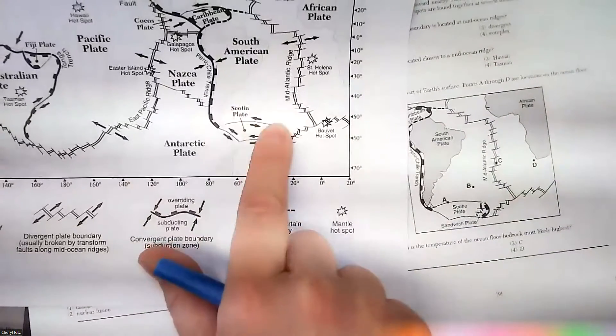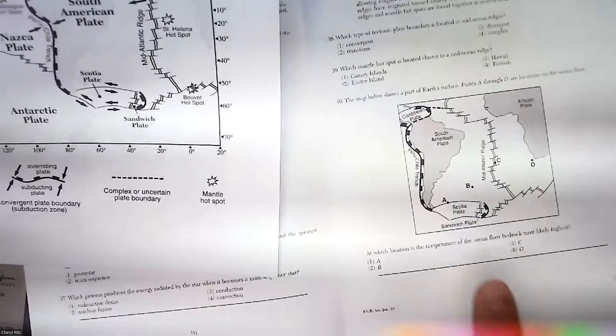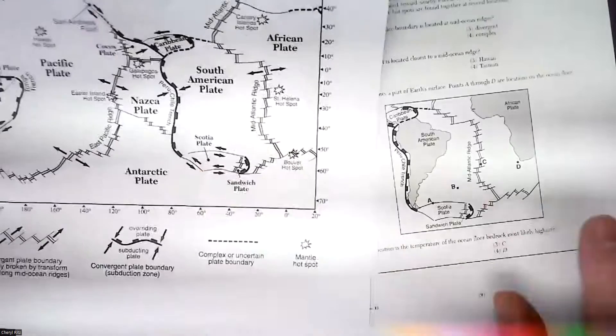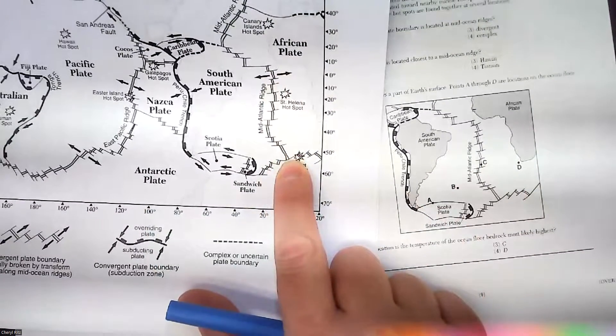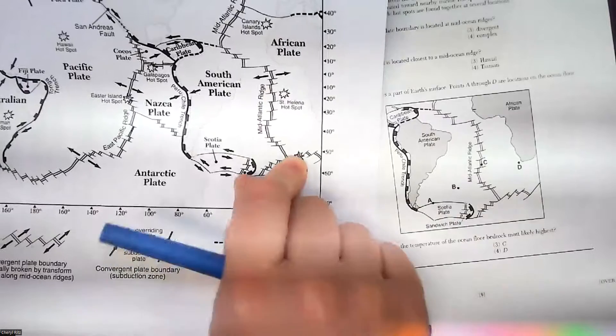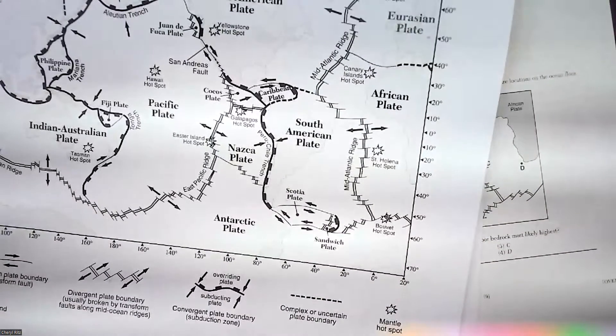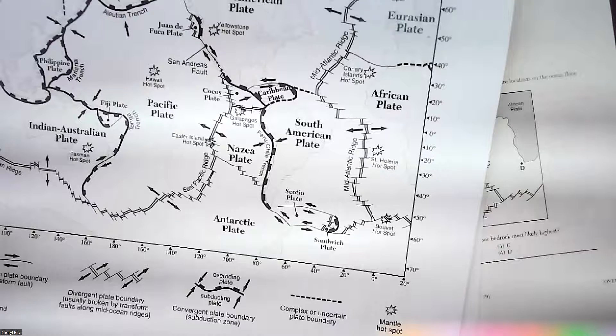Answer A is near South America on the Scotia plate. Let's go take a look. It's right here. It's on a transform plate boundary, so just keep that in mind. B is in the middle of a plate, so it's not near an edge. C is at the mid-ocean ridge. What's happening at a mid-ocean ridge? It's a divergent plate boundary, so the plates are spreading apart.